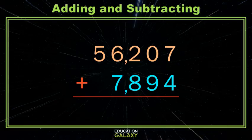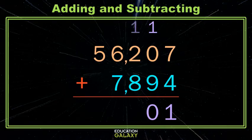So then we start on the right with our ones, adding our seven and four, we get eleven. So we leave the one in the ones, and we carry the other ten to the next column. Now we have zero and nine, which is nine, plus the one we carried is ten. So we leave our zero here and we carry that one over.